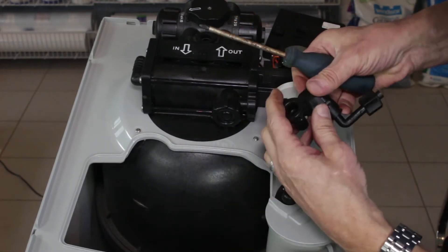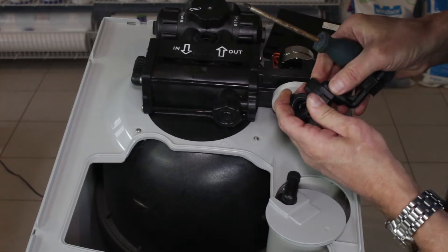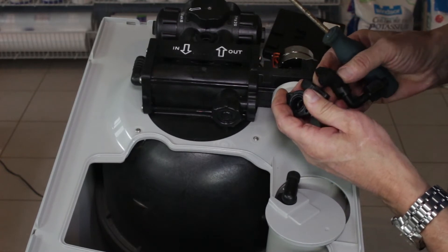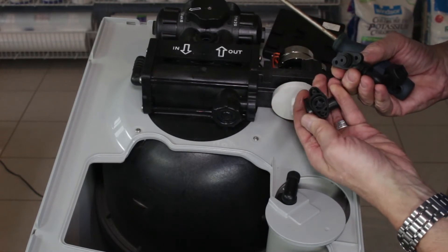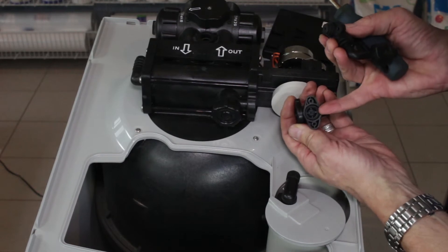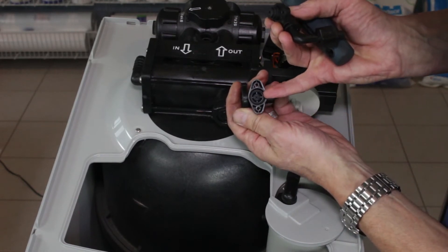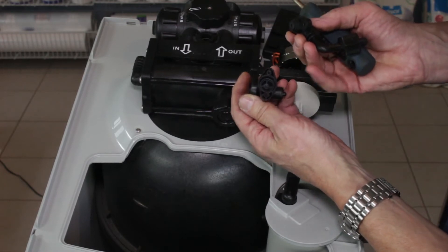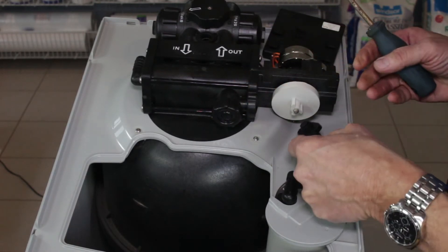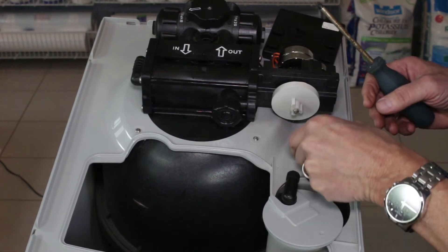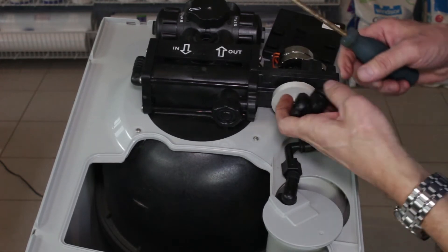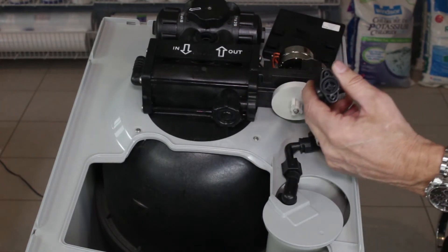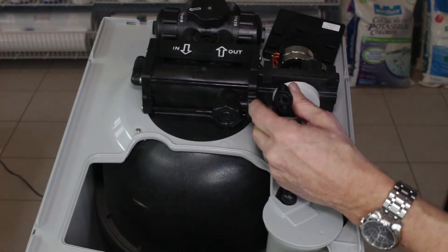All right, so now we get access inside here. Again, be careful of the components in here. That little black piece that looks like an o-ring or a seal at the bottom is the brine line flow control. What you need to do is make sure that the hole in the center of that brine line flow control is clear.